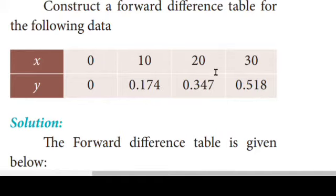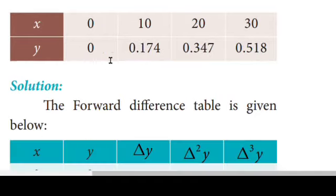So we have X1, X2, X3, X4. Now this is Y1, Y2, Y3, Y4. The forward difference table is given below.